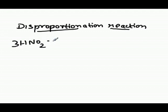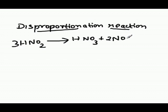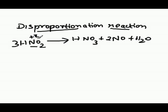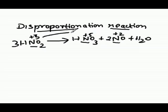Nitrous acid has the formula HNO₂. On disproportionation, HNO₂ gives nitric acid (HNO₃), plus nitric oxide (NO), plus water (H₂O). The oxidation state of nitrogen in HNO₂ is +3, in HNO₃ it is +5, and in nitric oxide (NO) it is +2.